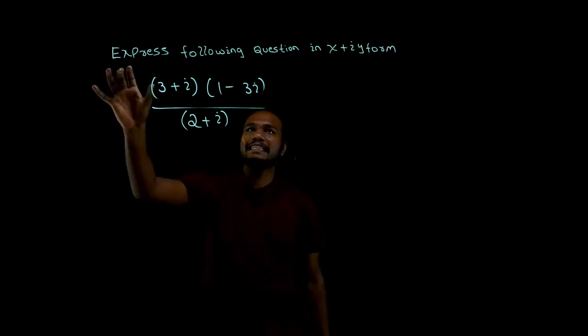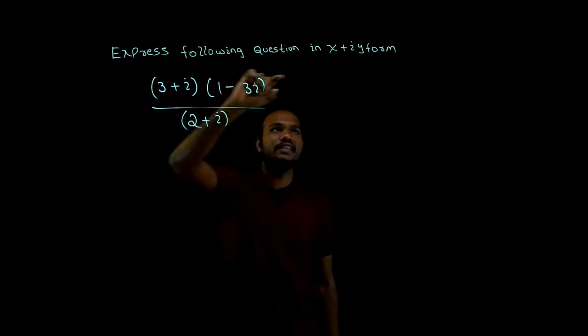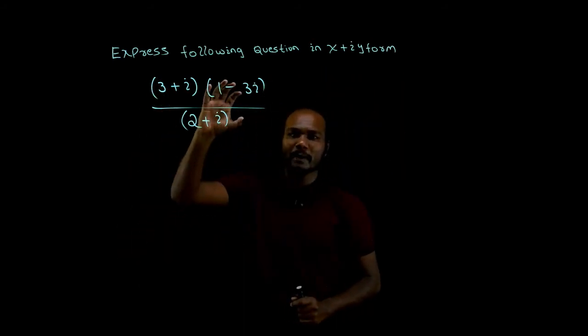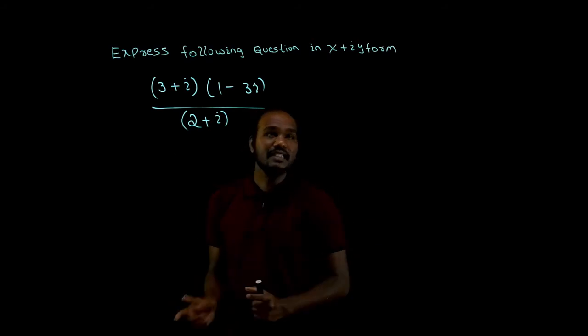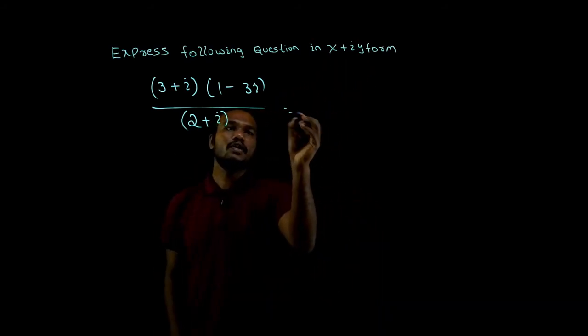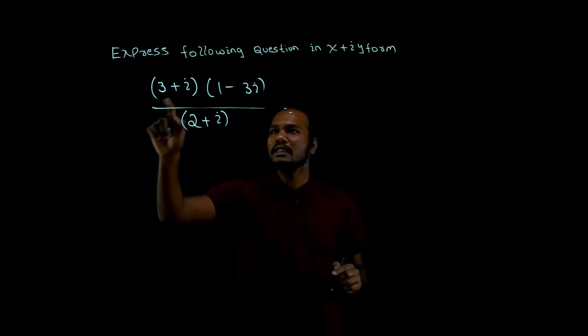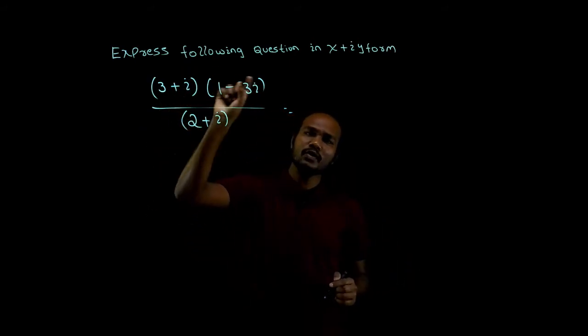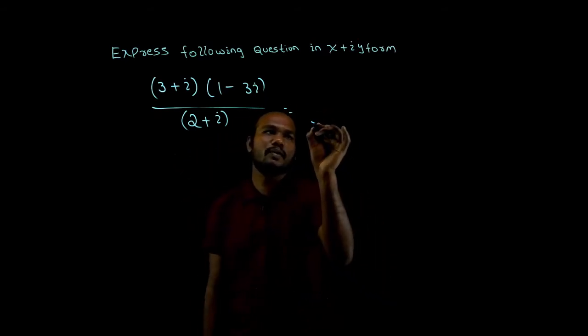Let's go to the question. Express the following question in the form of x plus i. We have to represent this question in the form of x plus i. See, in the numerator there are two complex numbers, but in the denominator there is one complex number. So two complex numbers we have to convert into one complex number first.